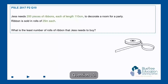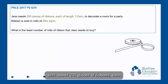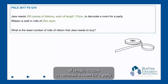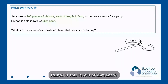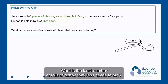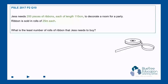Question 10. Jazz needs 200 pieces of ribbons, each of length 110 cm, to decorate a room for a party. Ribbon is sold in rolls of 25 meters each. What is the least number of rolls of ribbon that Jazz needs to buy?